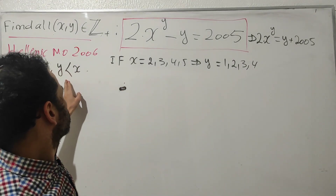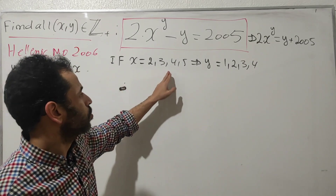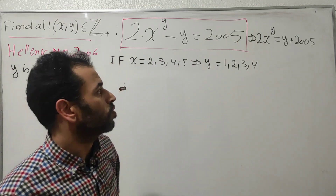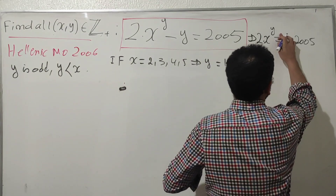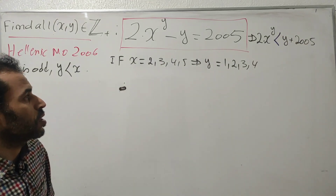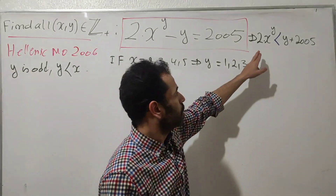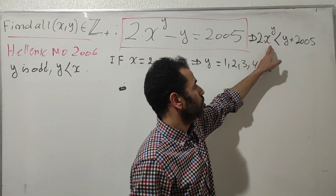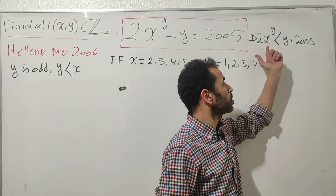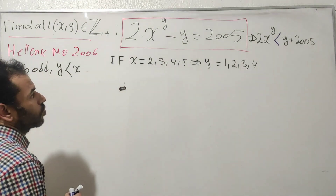Always keeping y smaller than x: if x = 2, then y = 1; if x = 3, then y = 1 or 2; and so on. In all these cases, the left-hand side is always smaller than the right-hand side of the equation. Replacing any of these small values of x or y into the left-hand side never reaches 2005, so for x = 2, 3, 4, or 5 there is no solution.